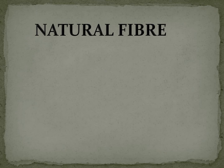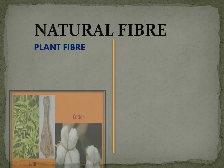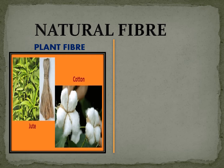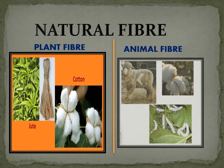Here we are discussing about natural fiber. Natural fibers are of two types: plant fiber like jute and cotton, and animal fiber like wool and silk. Here we are discussing about animal fiber.